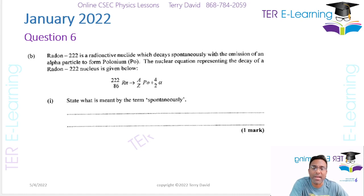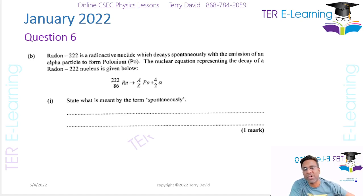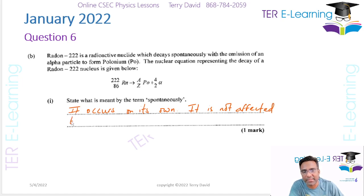'Random' has to do with the unpredictable nature of radioactive decay. If you are looking at a sample of a radioactive material, it's difficult for us to predict when it's going to happen or which atom is going to decay. 'Spontaneous' means it occurs on its own accord, meaning that it is not affected by factors external to the nucleus.